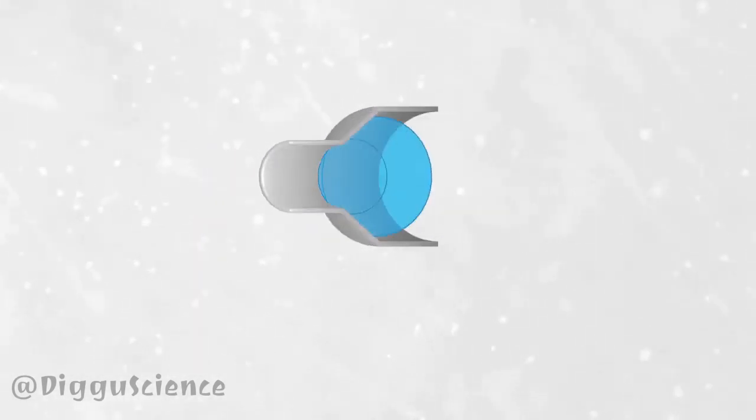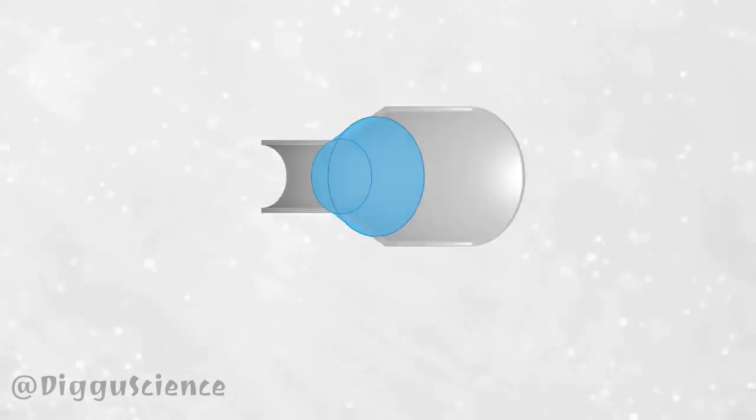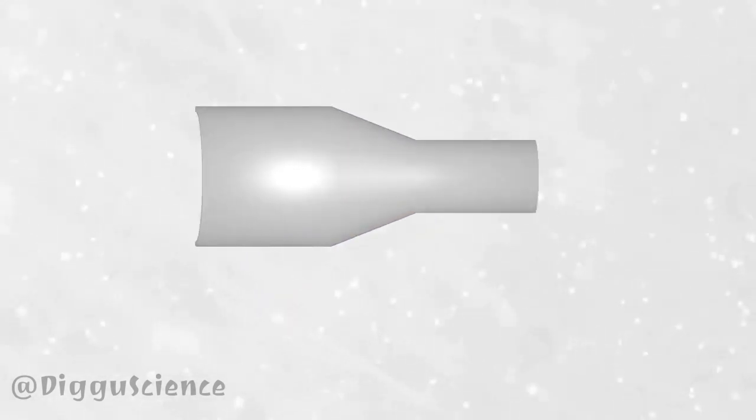So the first stage is to create a control volume. Here is the control volume when viewed from the side. The area where fluid flows in or out is called the control surface.